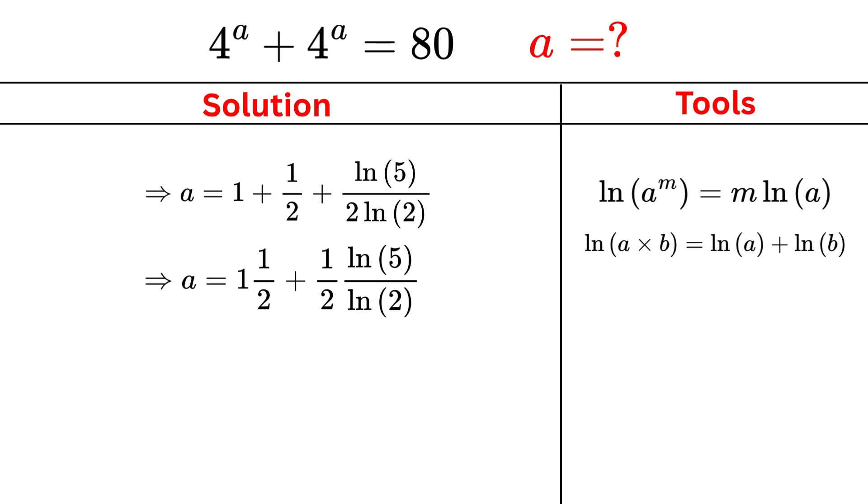Combining 1 and 1/2 gives us 3/2, and we still have the extra term (1/2) × log₂(5). So turning 1 and 1/2 into an improper fraction, we get 3/2. Therefore, a = (3 + log₂(5)) / 2.